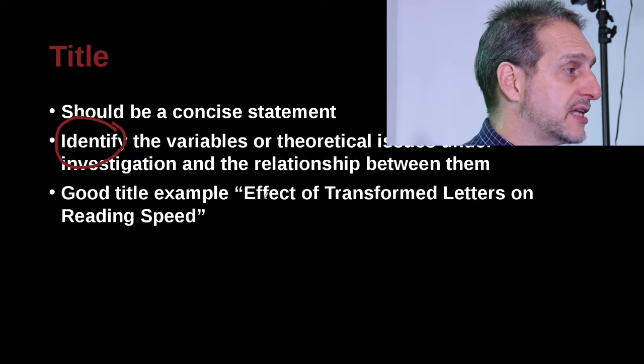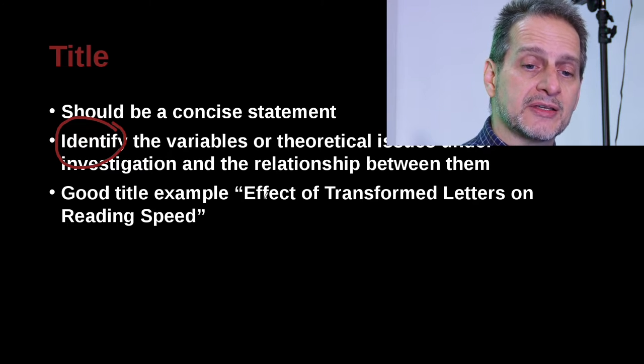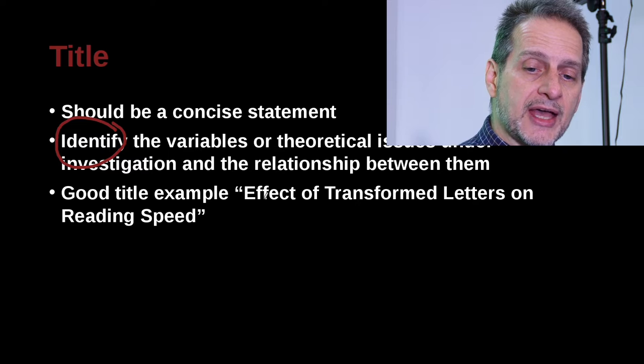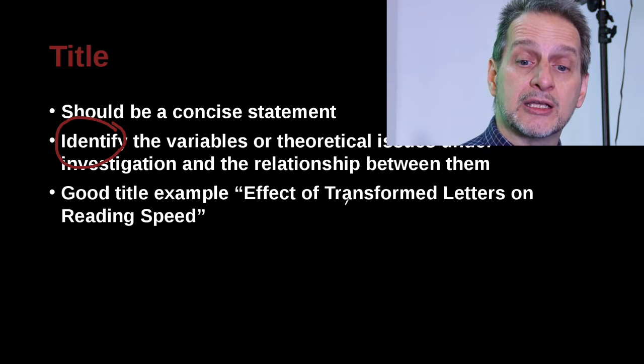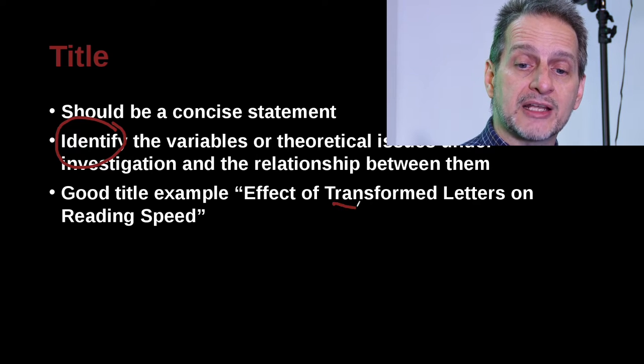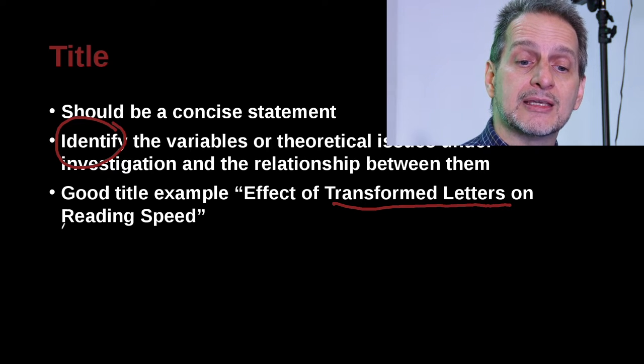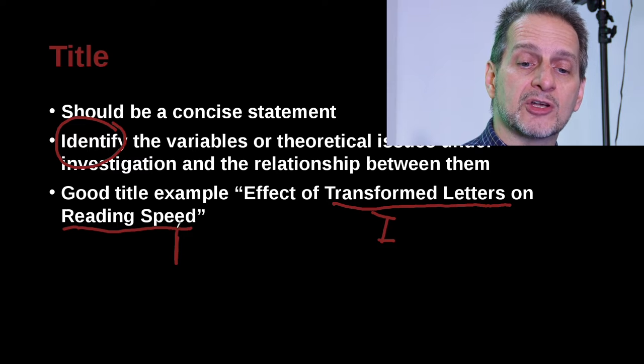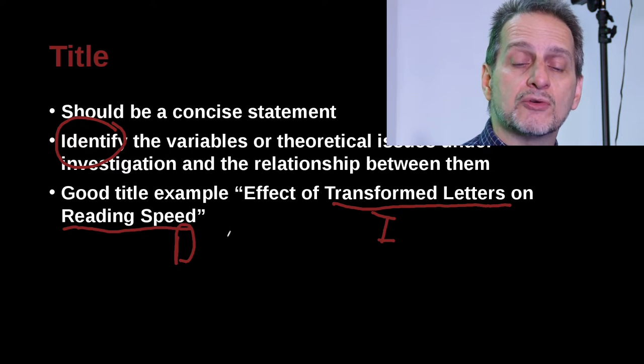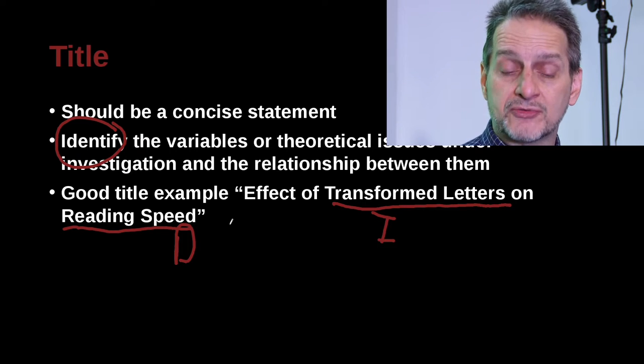And here's an example. In this example, we can see the effect of transformed letters on reading speed. So here we have a very short title, and this title tells us that the variables in this study include transformed letters, that is some kind of change in the print of the letters, and probably the dependent variable is reading speed. So independent variable here, and your dependent variable right here. So that is a really good title. Why? Because it shows us exactly what is involved in this study.